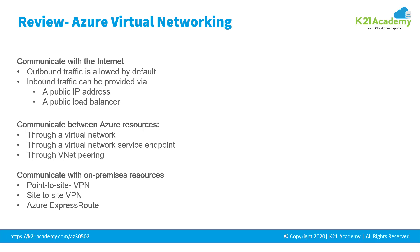We have point-to-site (P2S) VPN, which is established between a virtual network and a single computer in your network. Each computer that wants to establish connectivity must configure its connection. This is great if you are just getting started with Azure or for developers, as it requires little or no changes to your existing network topology. Communication is sent through an encrypted tunnel over the internet. Site-to-site VPN is established between your on-premise VPN device and an Azure VPN gateway. Any on-premise resource you authorize can access the virtual network through an encrypted tunnel over the internet.